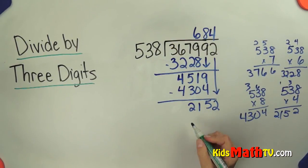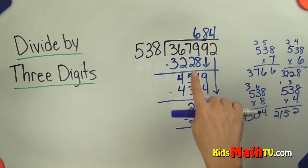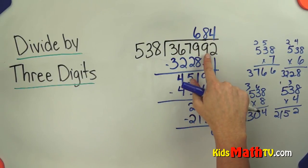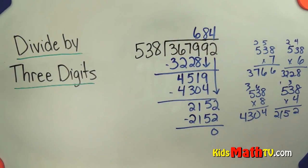4 times 538 is 2,152. And I have no remainder. So 367,992 divided by 538 is 684. And that's the end of the lesson on dividing by 3 digit numbers.